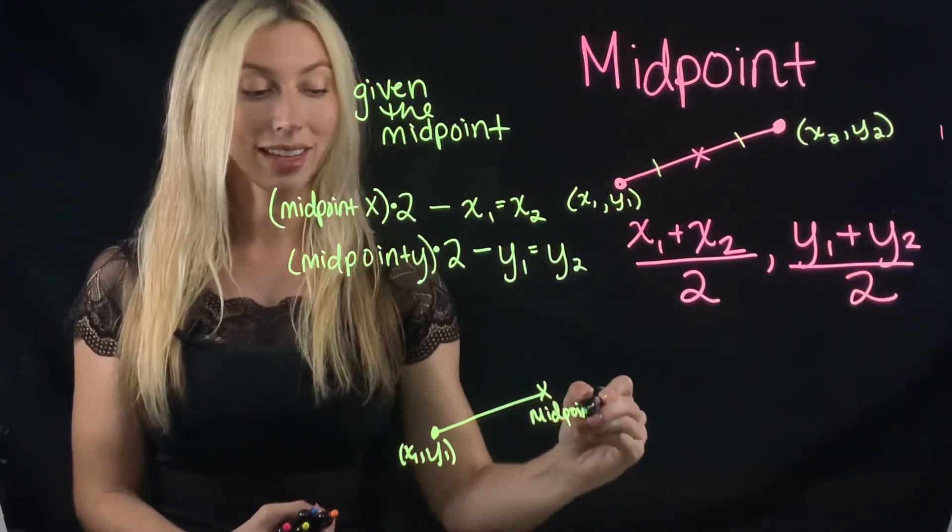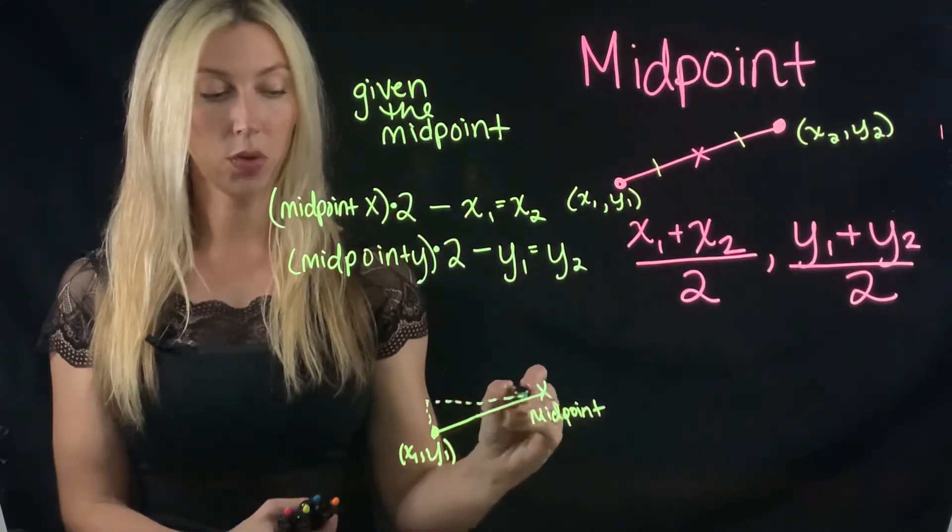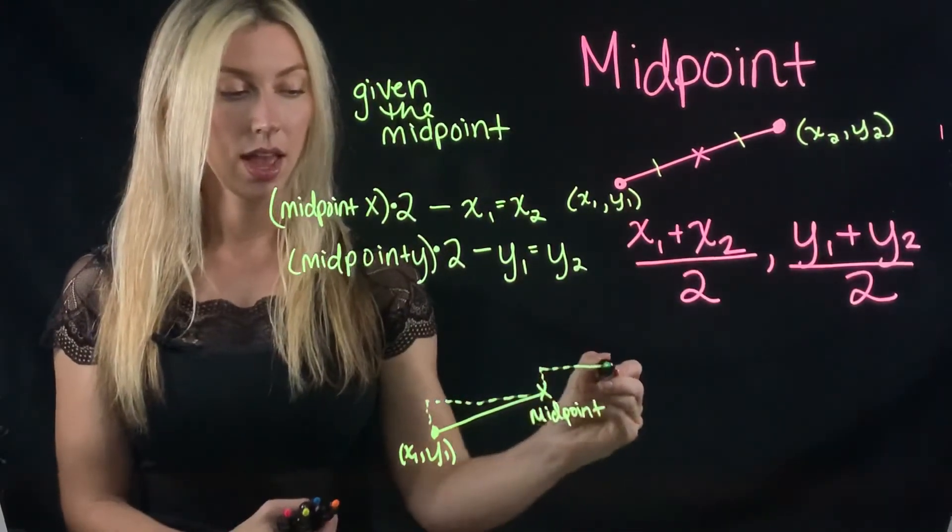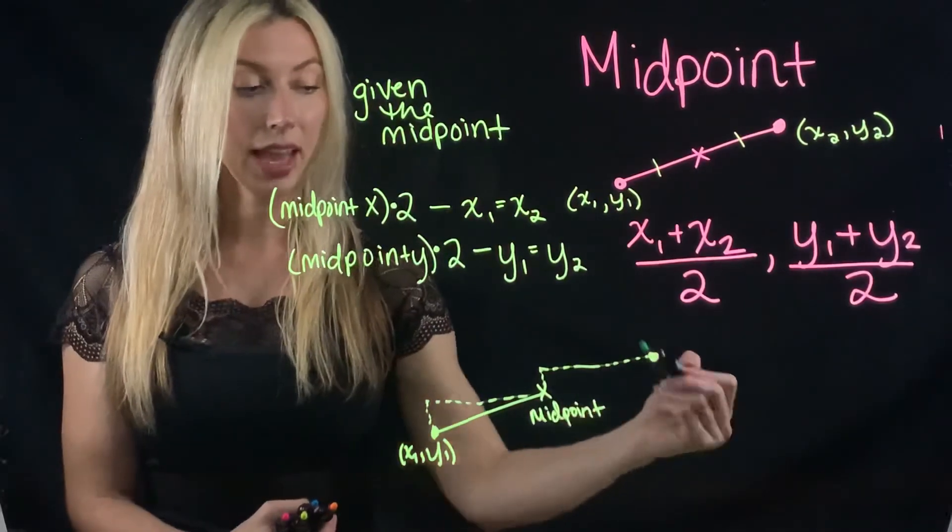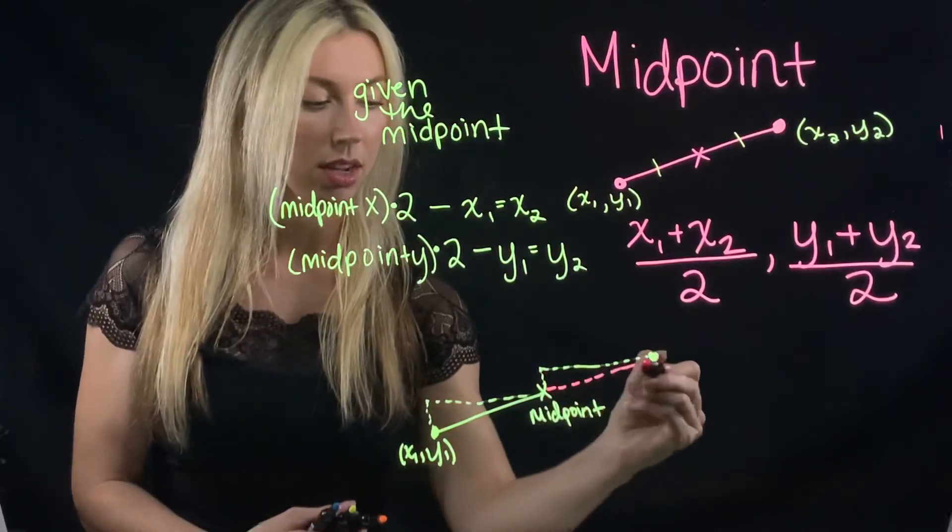What I like to do on a graph is I simply count kind of like up and over. And then I go that same distance up and over to get where my new endpoint should be. And I can kind of draw in here.